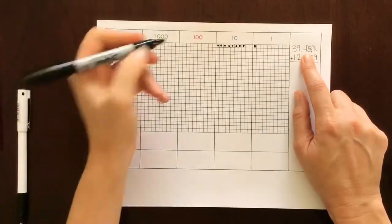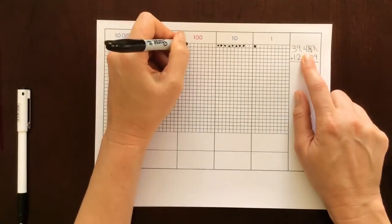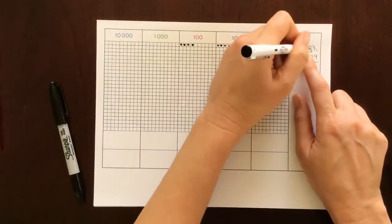Next is the hundreds place. We have four hundreds: 1, 2, 3, 4. Let's cross that off.